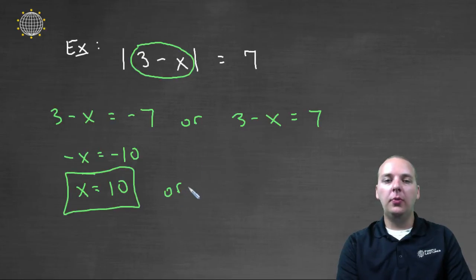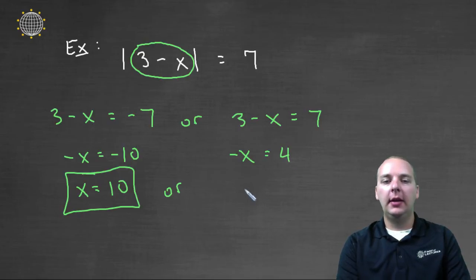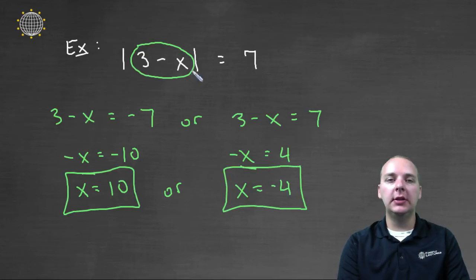Or we could have negative x equals seven minus three, which would be four, in which case x would be negative four.